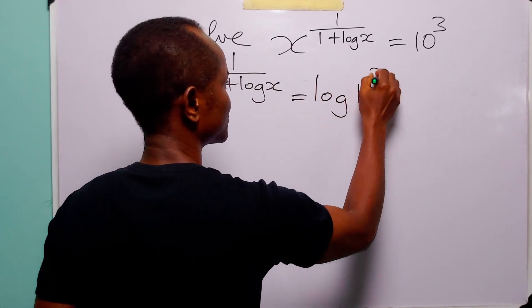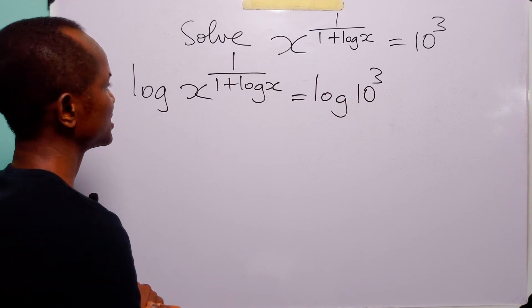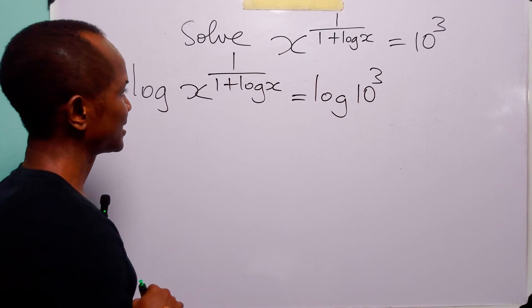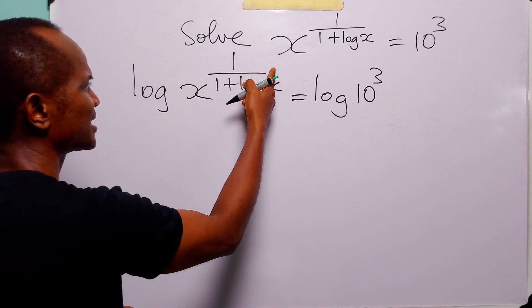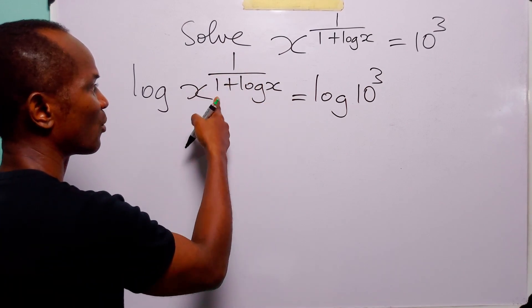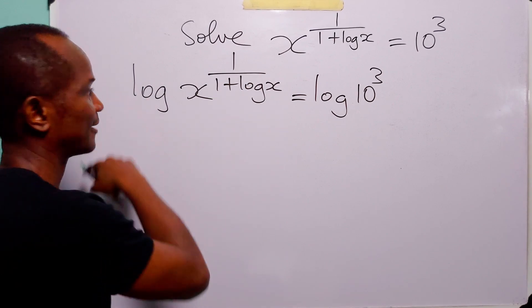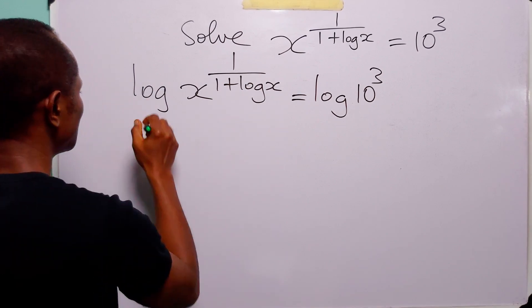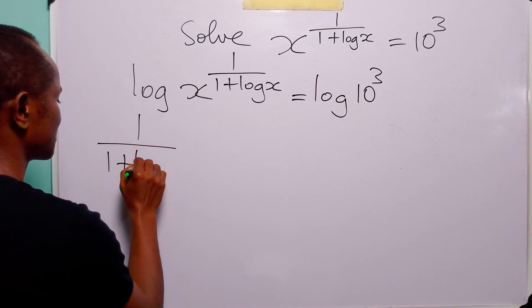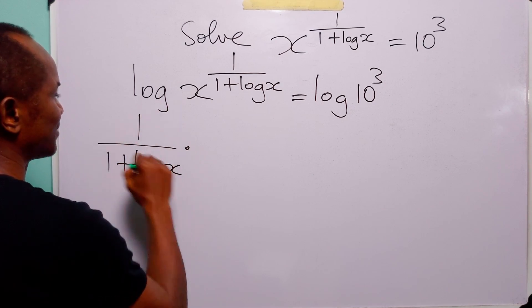The next thing we are going to do is apply the power rule of logarithms — the rule that says we can bring down the exponent (1 over 1 + log x) to the front to become a multiplier. When we do that we have (1 over 1 + log x) multiplied by log x is equal to...